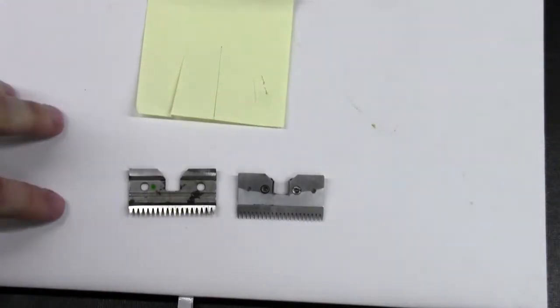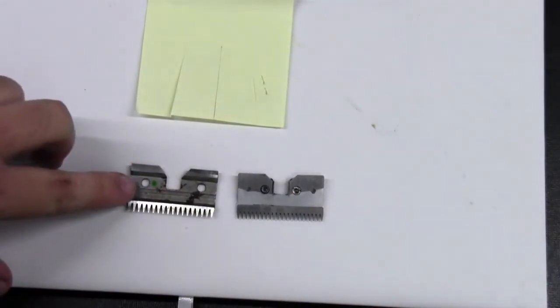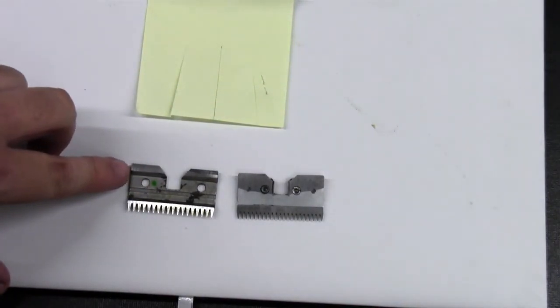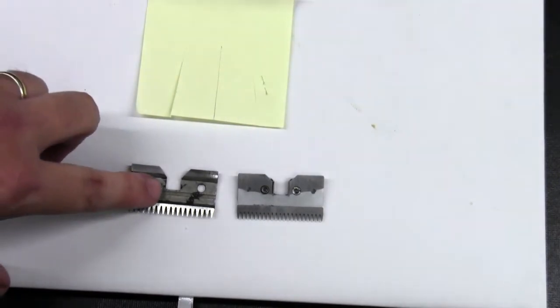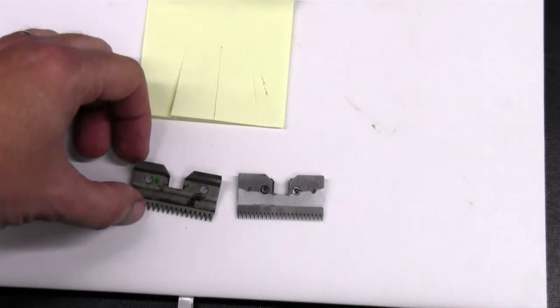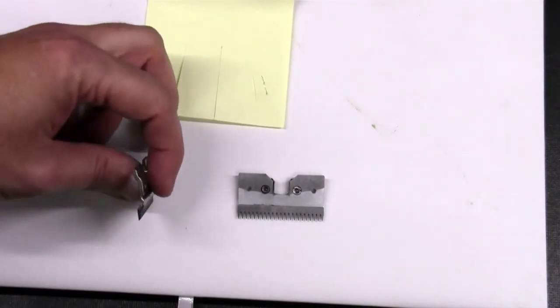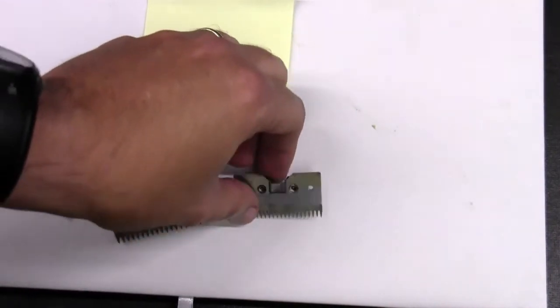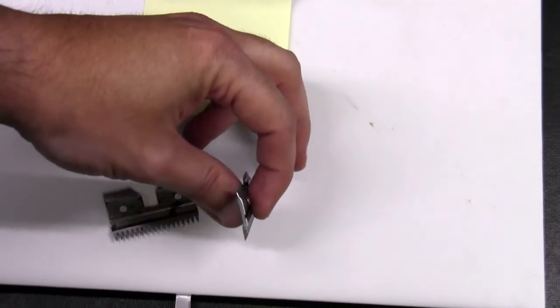So while the cutters themselves are slightly different, the design is the same. And as you can see on this one on the left, you have the feet still on it. So the back rails or the back feet are still there which allows the blade to cut properly. This one, as you can see, they were ground off.